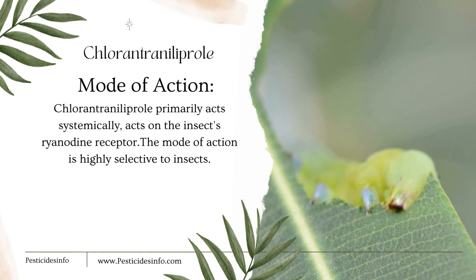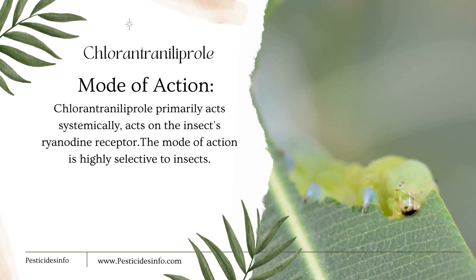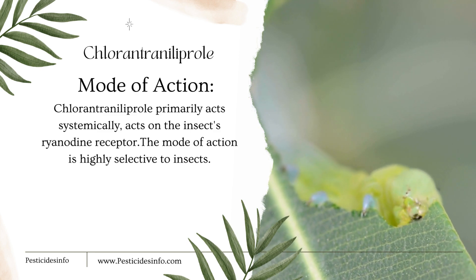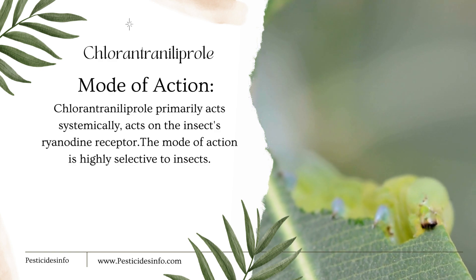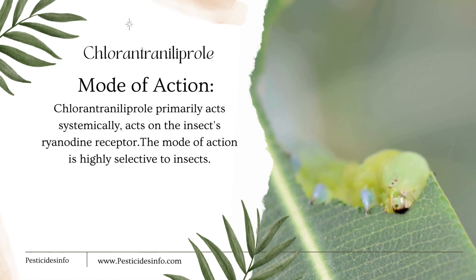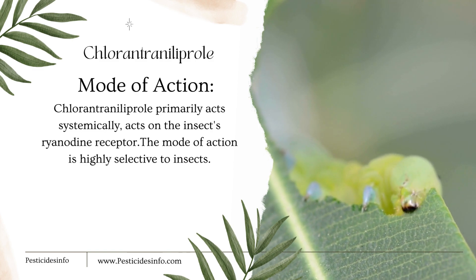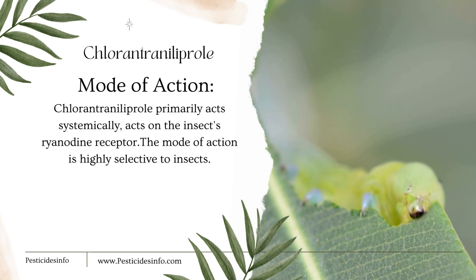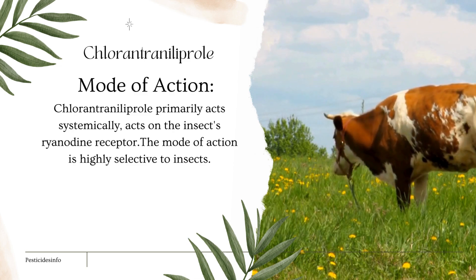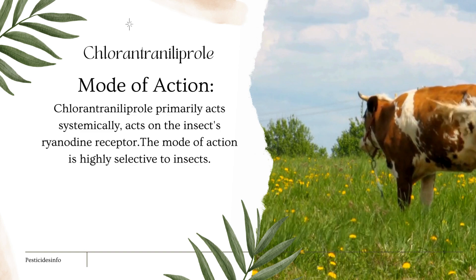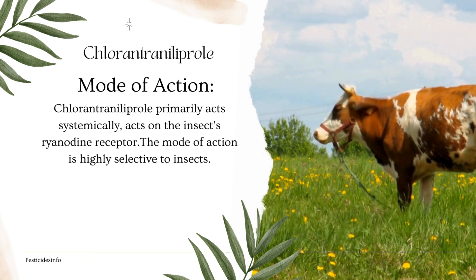Mode of action: Chlorantraniliprole primarily acts systemically, absorbed by plants to control pests internally, while also offering some contact activity against insects directly exposed to treated surfaces. It acts on the insect's ryanodine receptor — specifically the ryanodine receptor calcium channel — disrupting calcium regulation in insect muscle cells, leading to muscle paralysis and ultimately death. The mode of action is highly selective to insects, as mammals, including humans, lack this specific ryanodine receptor subtype in their muscle cells, making it relatively safe for mammals.